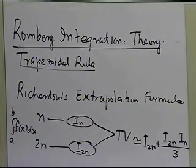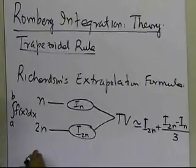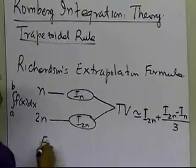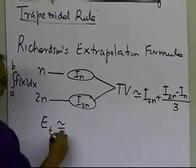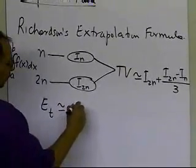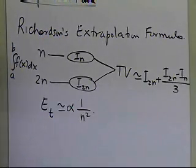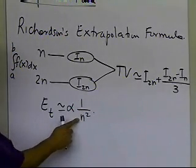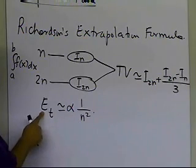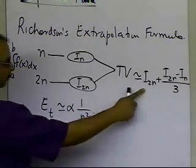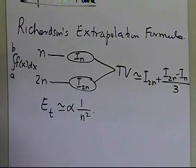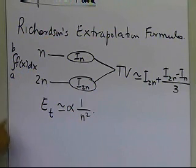This formula was based on the fact that the true error in the trapezoidal rule is approximately proportional to 1/n². So as you keep doubling the number of segments, your true error gets quartered. Based on that, we are able to derive this formula and get a better approximation of the integral.